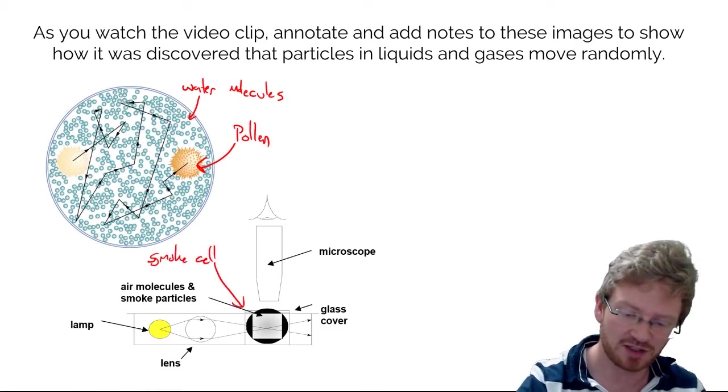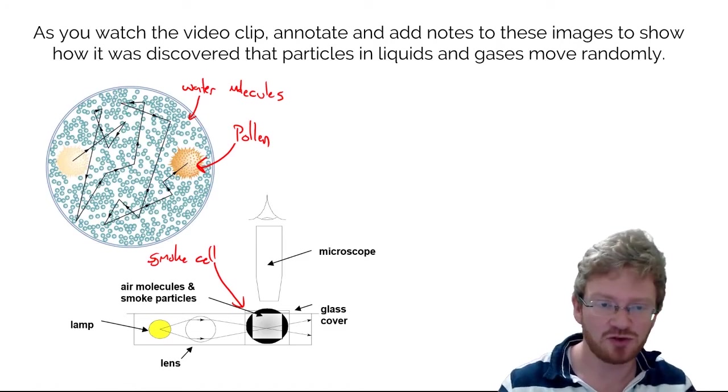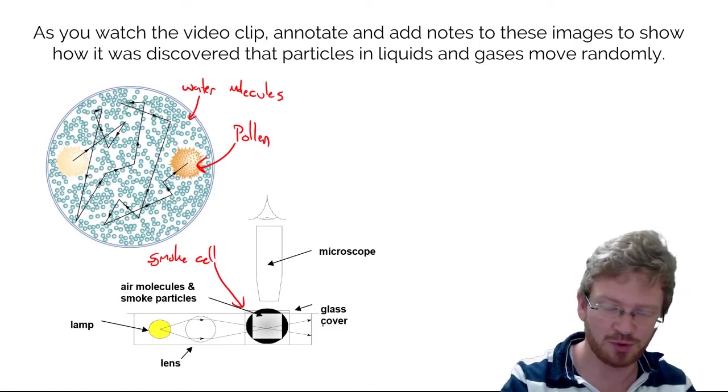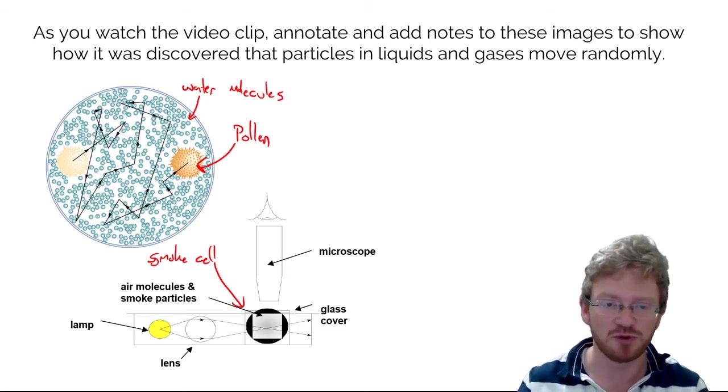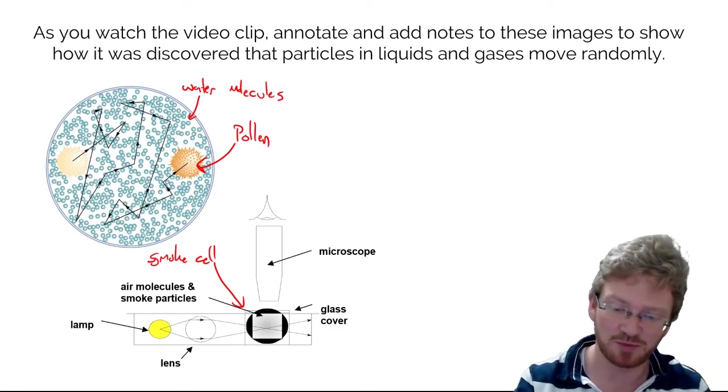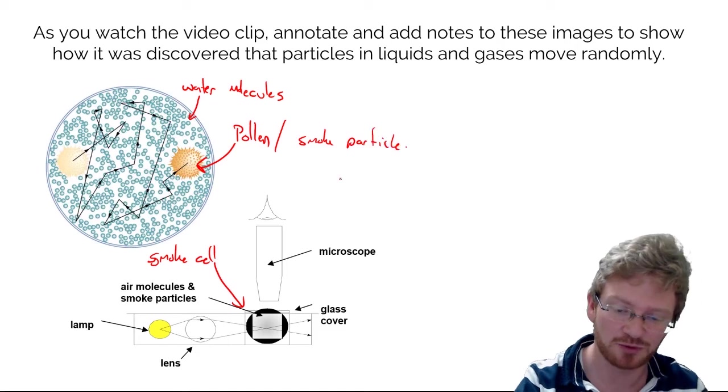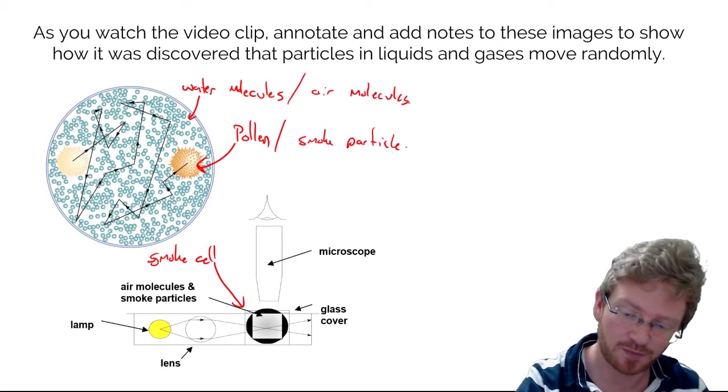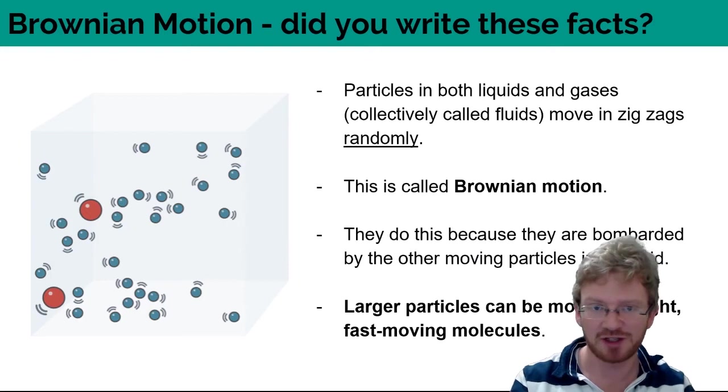This is a smoke cell here. The idea of a smoke cell is you have a lamp and you shine light into a glass box full of smoke. You often get the smoke by lighting some paper on fire and putting some smoke inside it. And again, it's the same idea. So this time instead of having pollen, you could have a smoke particle, which would be like a little lump of soot, and it would be surrounded by air molecules. In both cases, we see it randomly moving around and seem to follow no clear path.